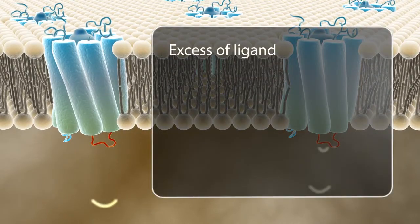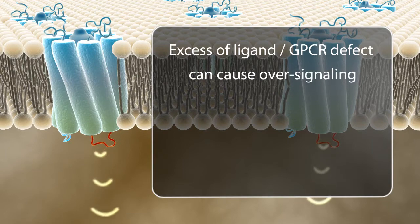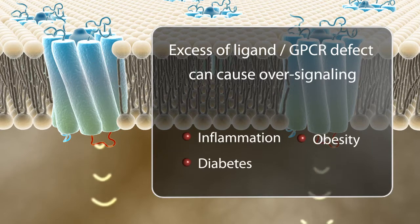An excess of ligand, or a defect in the GPCR itself, can lead to over-signaling within the cell, causing disease.